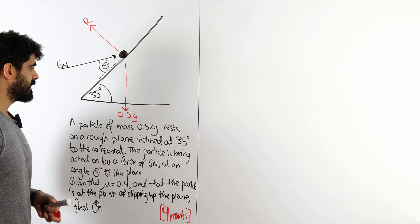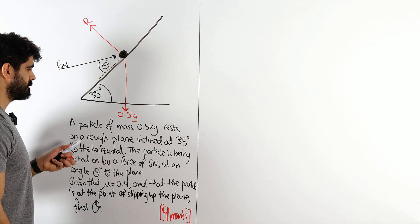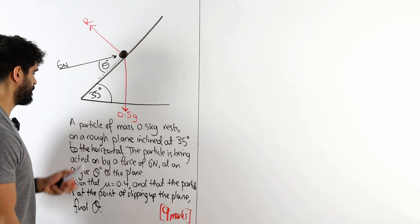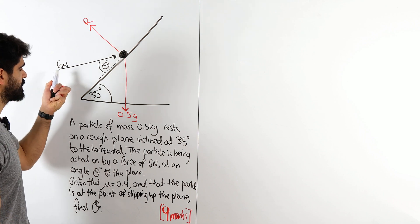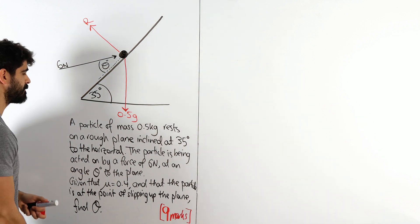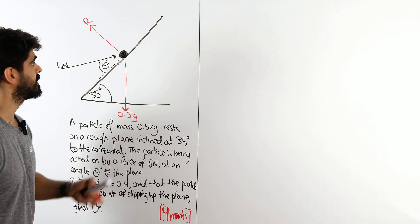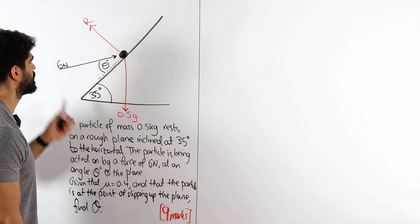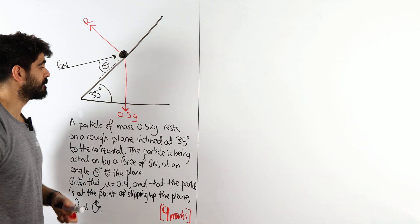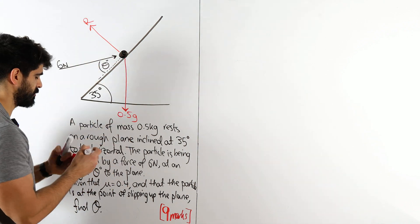So it's resting on a rough plane, so there is friction. I don't know exactly which way it's pointing. Then we have 35 degrees horizontal, the particle is being acted on by a force of six newtons at angle theta to the plane. Now the first thing I notice is with this six newtons, I do not like it when it is pointing towards the particle. All the forces should be pointing away from the particle.